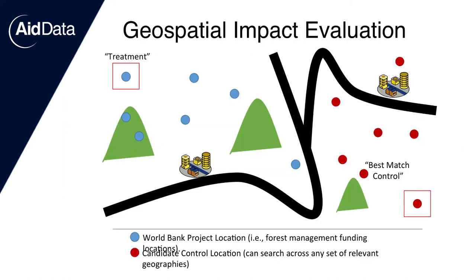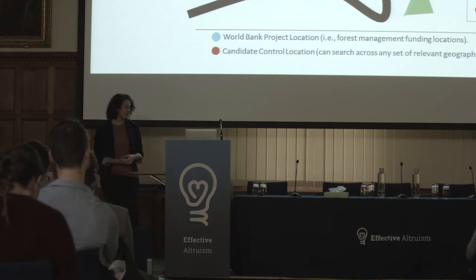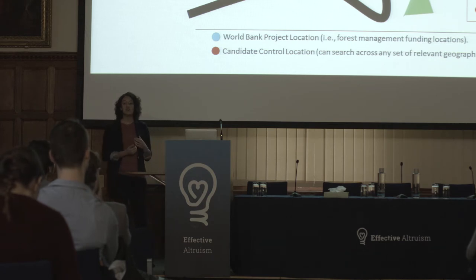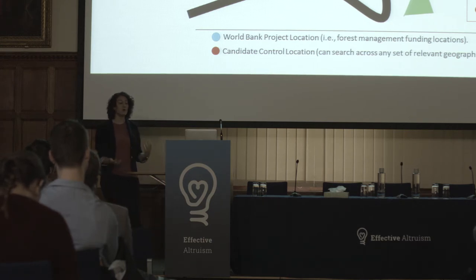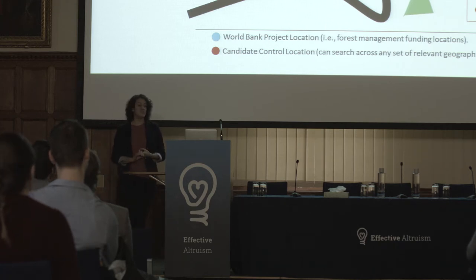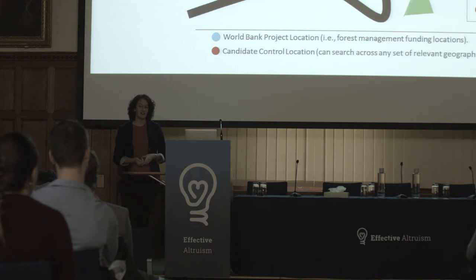GIE brings together geospatial data on development inputs and spatial data on development outcomes, along with high-powered computing, to fill what we call the missing middle of impact evaluation — vastly more rigorous than performance monitoring but less time- and cost-intensive than RCTs. GIE replicates the conditions of random assignment by analyzing terabytes of data on dozens of relevant variables to match each treatment location with a statistical twin — a location that's the same in all covariates except that it didn't receive the development intervention. A key distinction is that GIE uses existing data from satellites, surveys, and administrative sources, allowing evaluations to be conducted remotely, avoiding expensive field data collection.